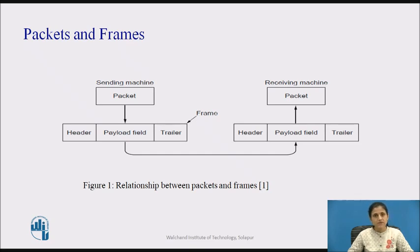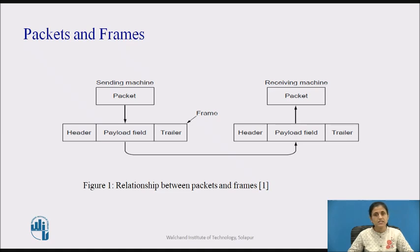Each frame contains a frame header, a payload field for holding the packet, and a frame trailer, as shown in figure 1. Error control is achieved by adding a trailer at the end of the frame. The trailer contains control information and is responsible for ensuring that frames are received intact or undamaged.